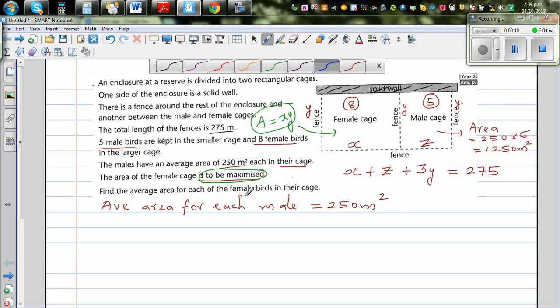My ultimate goal is I want to write area in terms of X or Y, and then I want to differentiate it and set it equal to zero to find the maximum. So we know A is equal to X times Y.